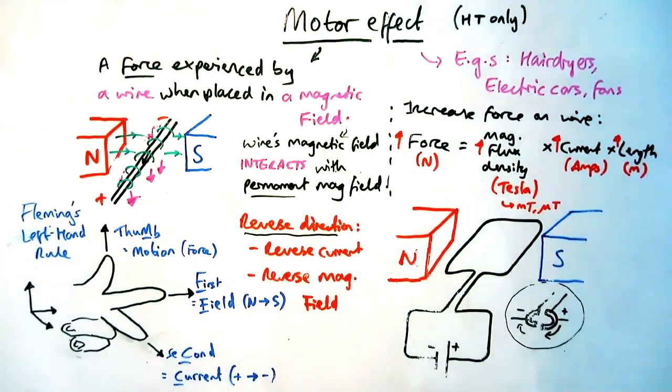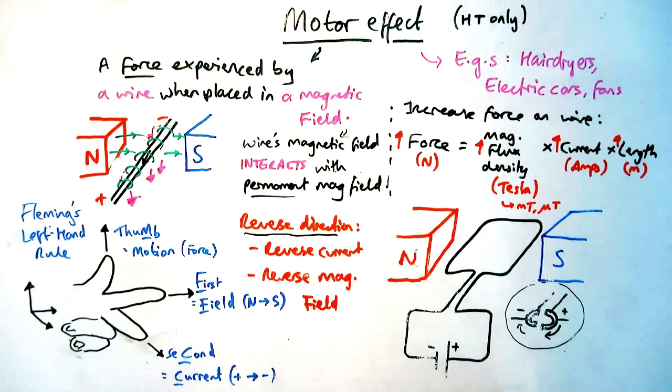Now how does this all link to our uses from earlier? So this is what an electric motor looks like and this is what you'll find in your hair dryers, your electric cars, electric drills, fans, etc.